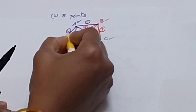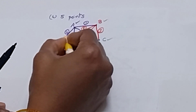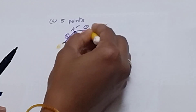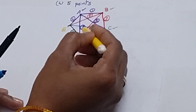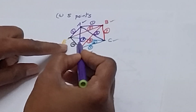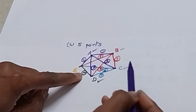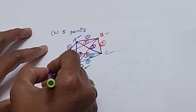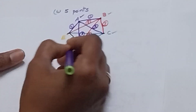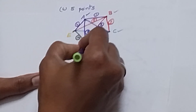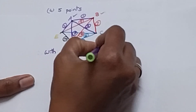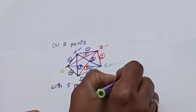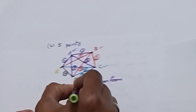Now we check E. E to A — already connected. E to B — connected. E to C — connected. E to D — connected. So totally, how many lines formed with 5 points? 10. Therefore, with 5 points, we can form 10 line segments.